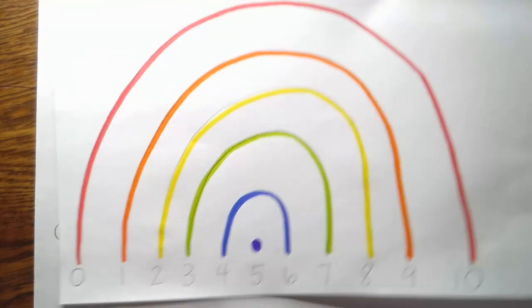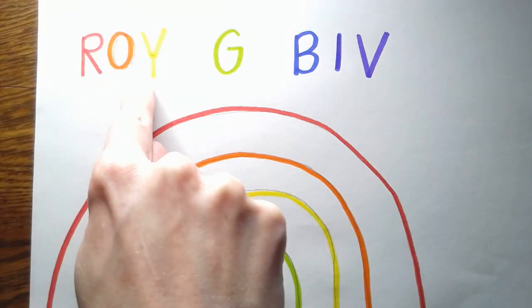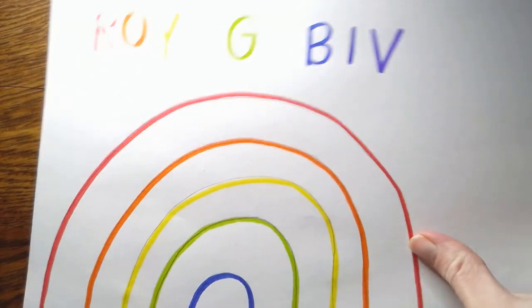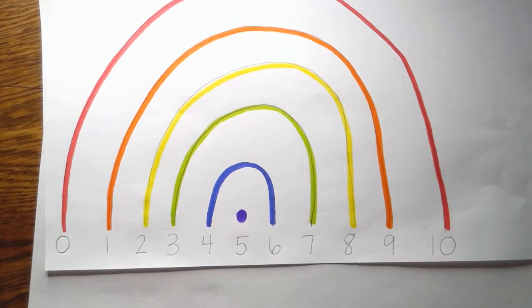I hope that you guys have a lot of fun making this. Don't forget about Roy G. Biv: red, orange, yellow, green, blue, indigo, and violet, too. Those are your colors. Fun. Here is your Decomposing Ten Rainbow. Have fun. I can't wait to talk to you guys later. Bye.